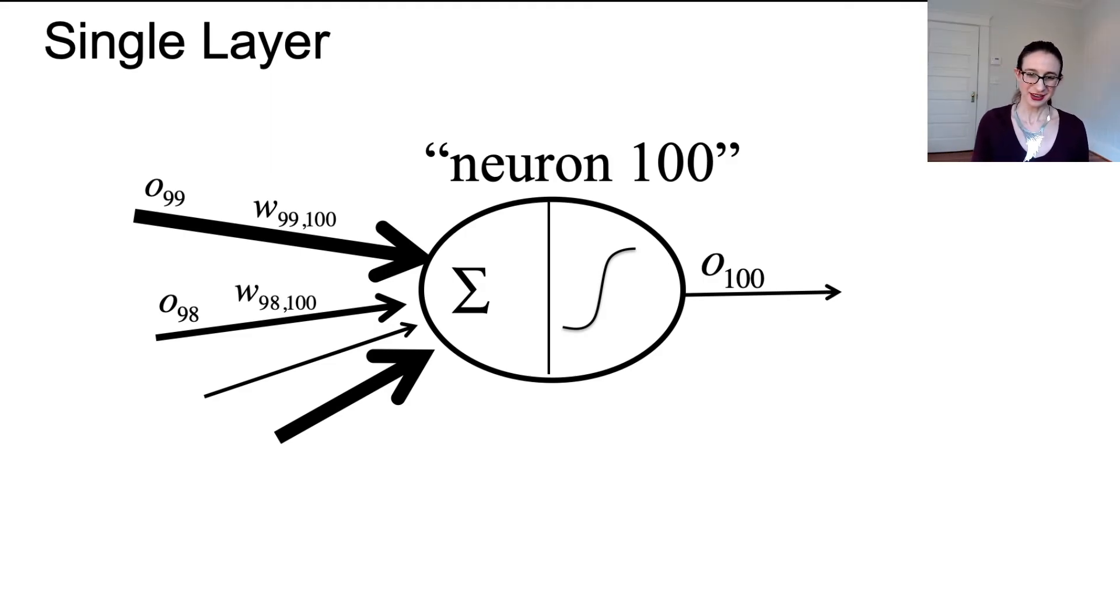Here's the neuron. It adds up the weighted inputs and sends the sum through the sigmoid and gets an output. Let's say that this particular neuron comes at the end of a 10-layer neural network and this is neuron 100. This is the very last neuron in the network and there are a bunch of neurons feeding into it. They're called 99, 98, 97 all the way down to 90 or whatever.